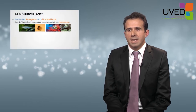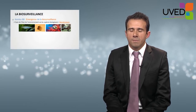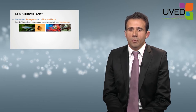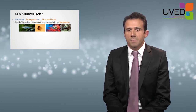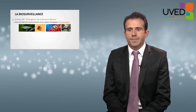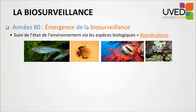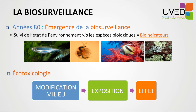Going back a few years — in the 80s, a new method emerged to manage biodiversity, which was called biosurveillance. It was about using, on several biological levels, the response of living species present in the environment. For instance, looking at the environmental health status can be done through biological species called bioindicators.